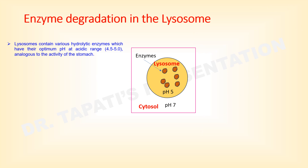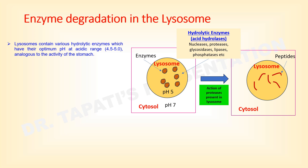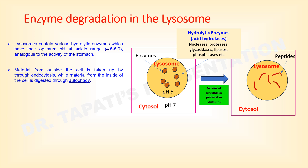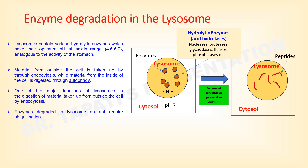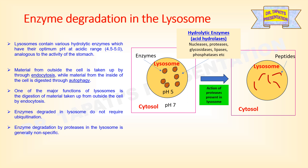Lysosomes contain various hydrolytic enzymes including nucleases, proteases, glycosidases, lipases, phosphatases, etc., which have their optimum pH in the acidic range of 4.5 to 5, analogous to the activity of the stomach. Lysosomes are known to contain more than 60 different enzymes. Since enzymes are proteinaceous, they are degraded inside the lysosome by the action of proteases. Material from outside the cell is taken up by endocytosis, while material from inside the cell is digested through autophagy. Enzyme degradation in the lysosome does not require ubiquitination and is generally nonspecific.